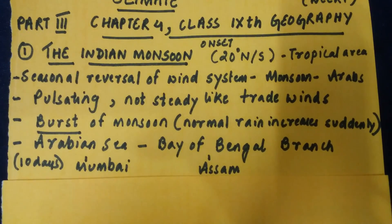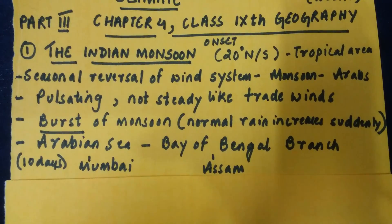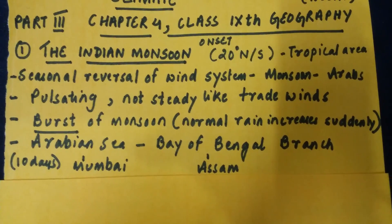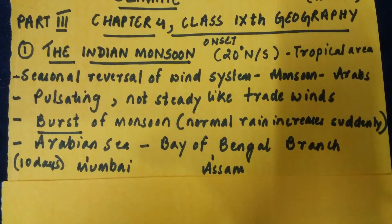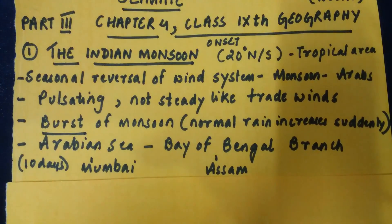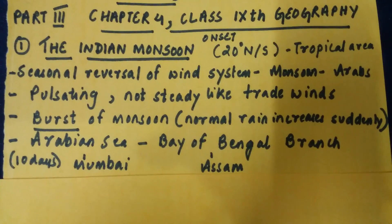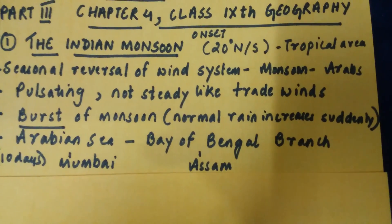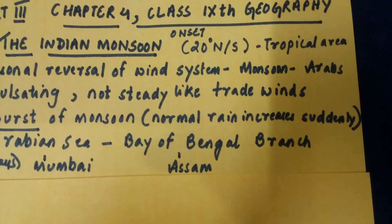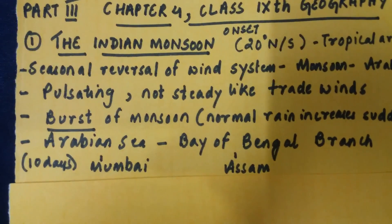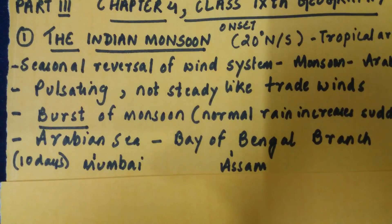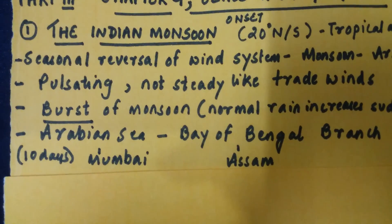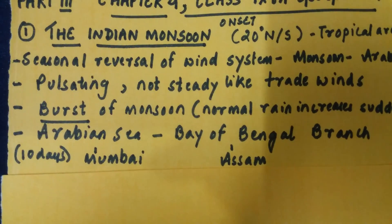Generally the wind system we have is the northeast trade winds, which are very steady and gradual. Suddenly these wind systems are reversed and there comes another wind system which is more pulsating, more vigorous, and not steady like the trade winds — this is called the monsoon. When this wind enters into the Indian subcontinent from the southern part, we call it the burst of monsoon.